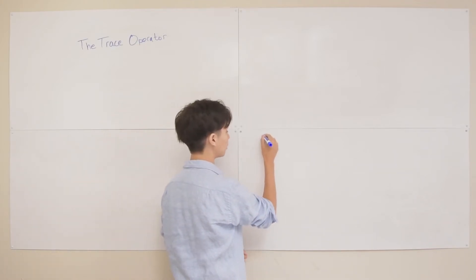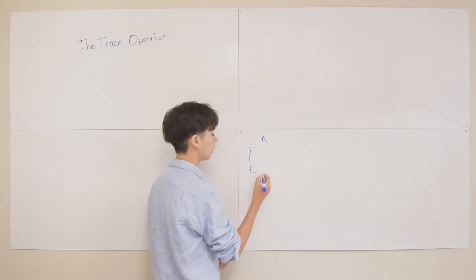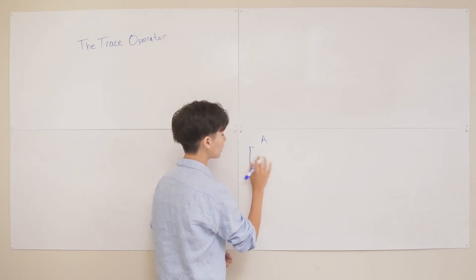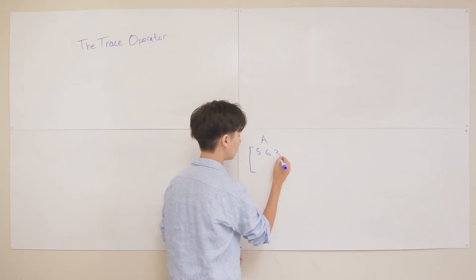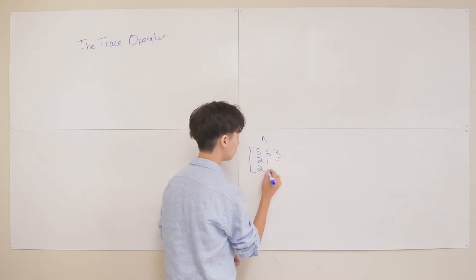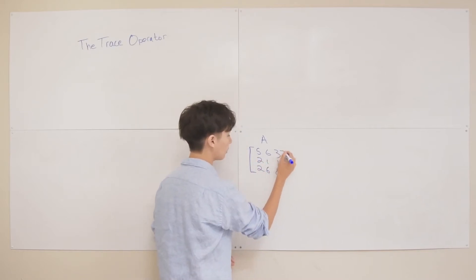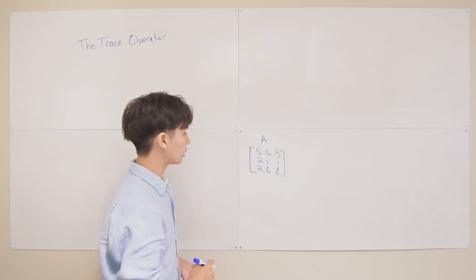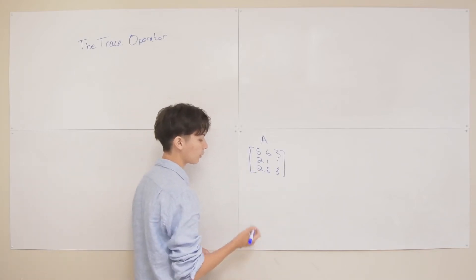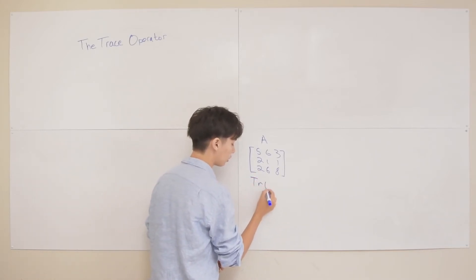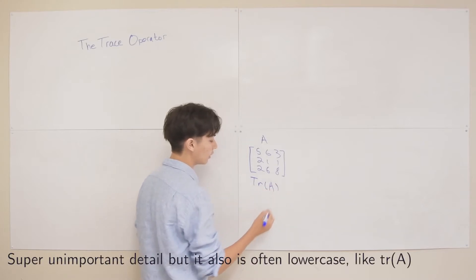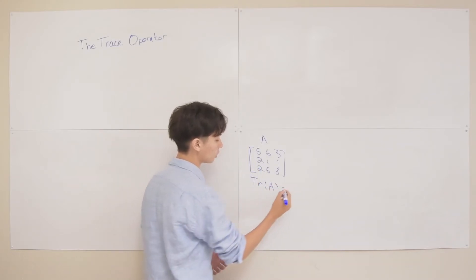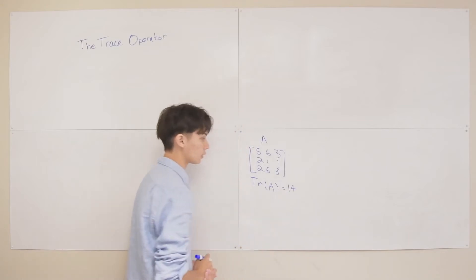For example, we have some matrix A. Let's do a numerical example: 5, 6, 3, 2, 1, 1, 2, 6, 8. Say we have this matrix here. If we wanted to take the trace of this matrix, we'd signify that with the notation Tr(A), so the trace of A is equal to the sum of its diagonal elements. That would be 5 plus 1 plus 8, so that would be 14. The trace of this matrix is 14.